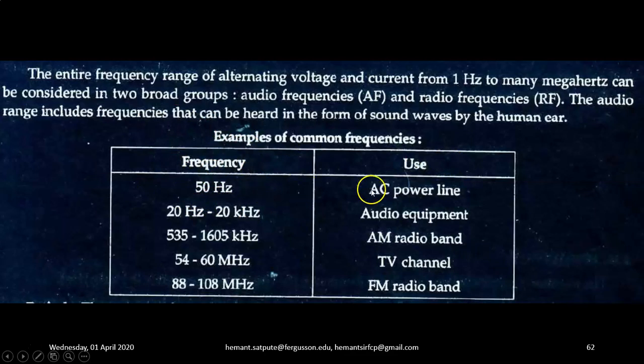Examples of common frequencies and their uses: 50 Hertz is the AC power line frequency used in most applications in India. 20 Hertz to 20 kilohertz is used in audio equipment. 535 to 1605 kilohertz is used in AM radio band. 54 to 60 megahertz is used in TV channels. 88 to 108 megahertz is used in FM radio bands.